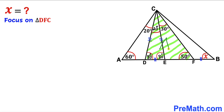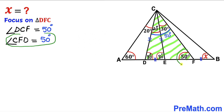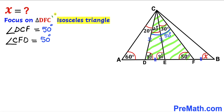Now let's focus on triangle DFC. The whole angle DCF is the sum of its two parts: 20 plus 30 degrees equals 50 degrees. We also observe that angle CFD is 50 degrees. Since both angles are 50 degrees, triangle DFC is an isosceles triangle, and its opposite sides CD and DF are congruent.